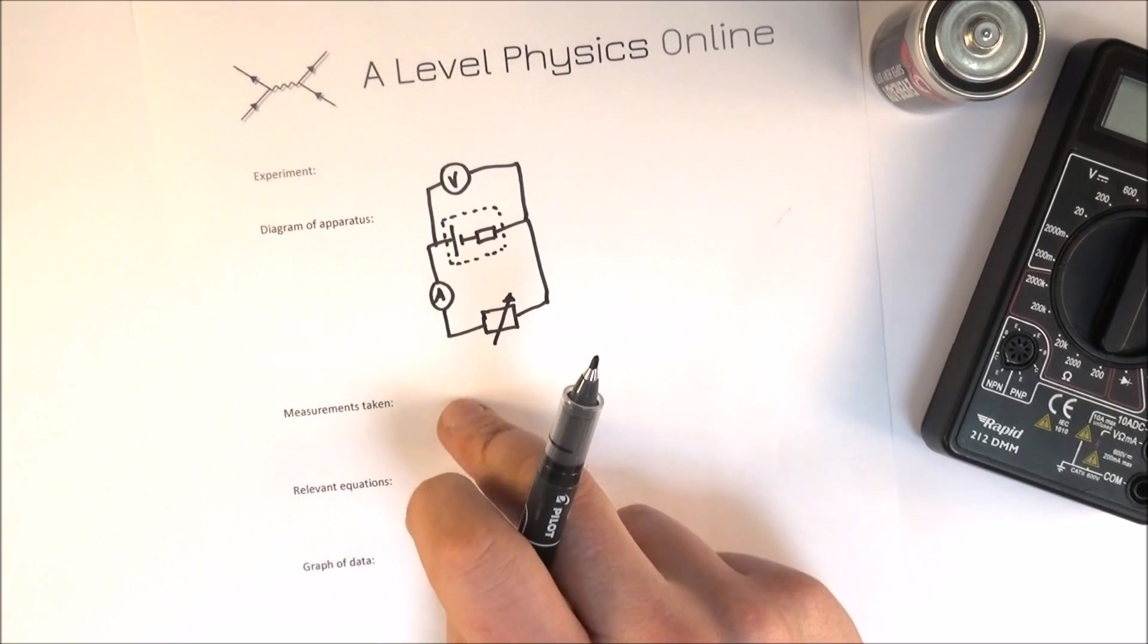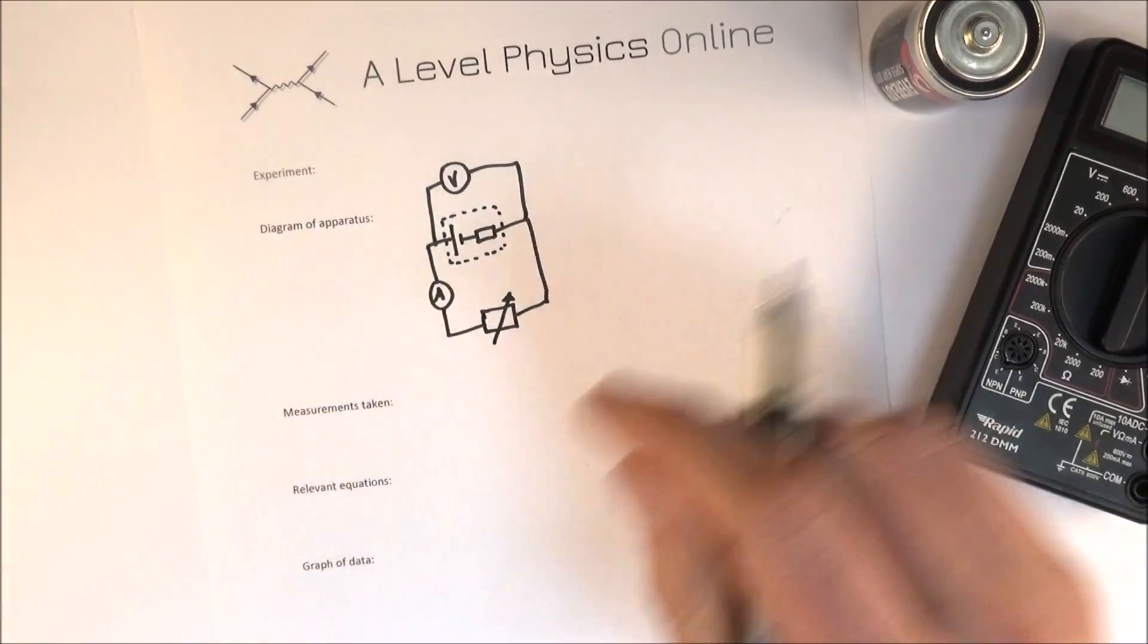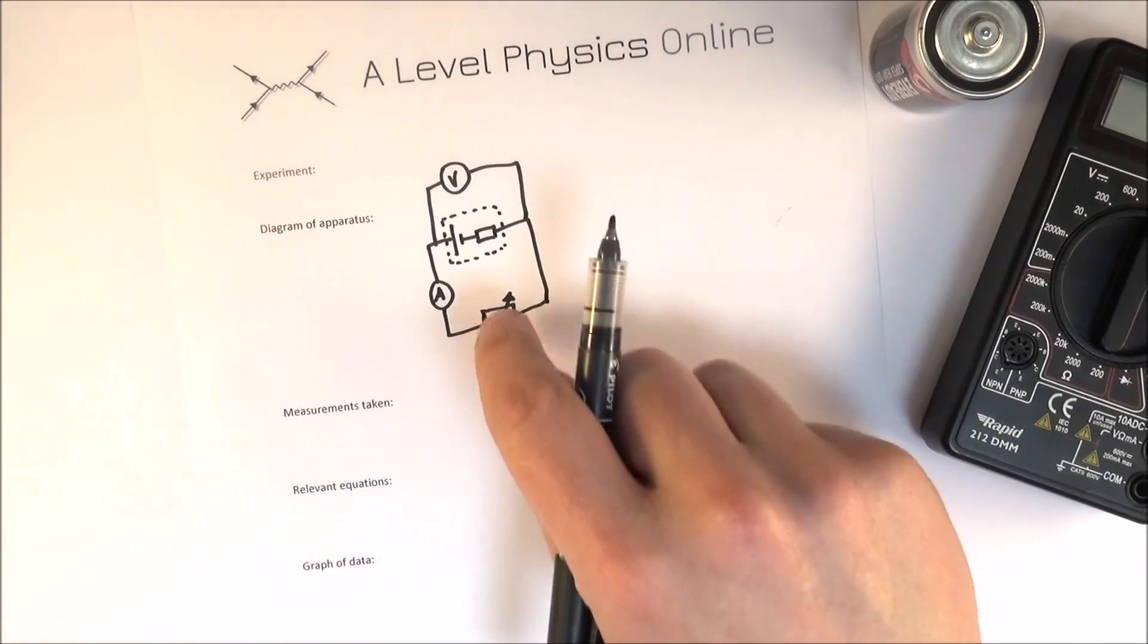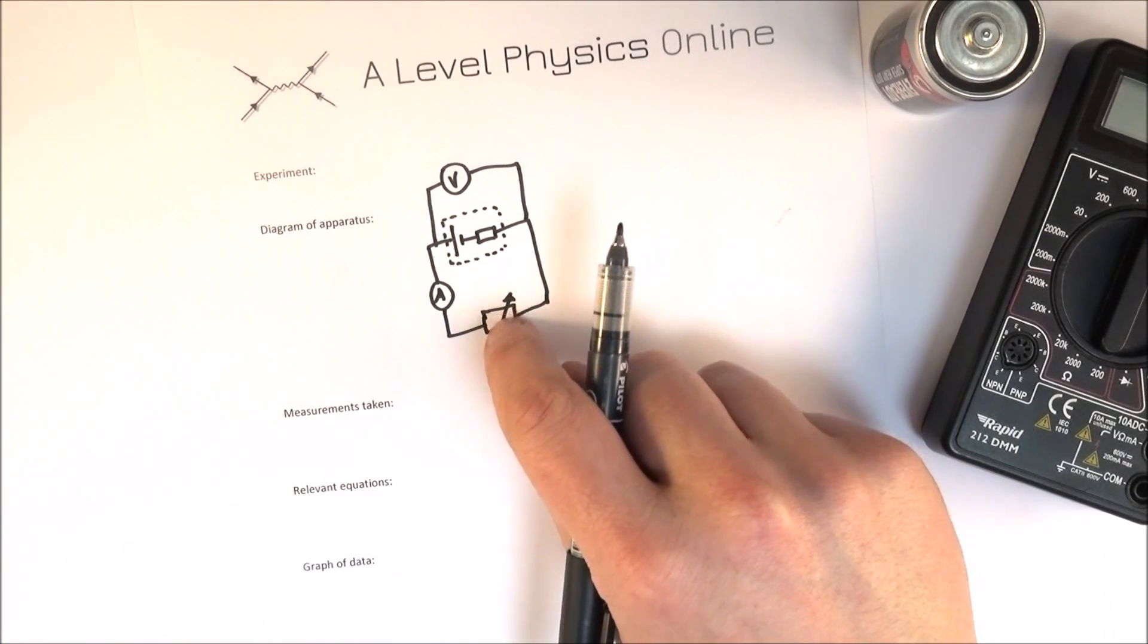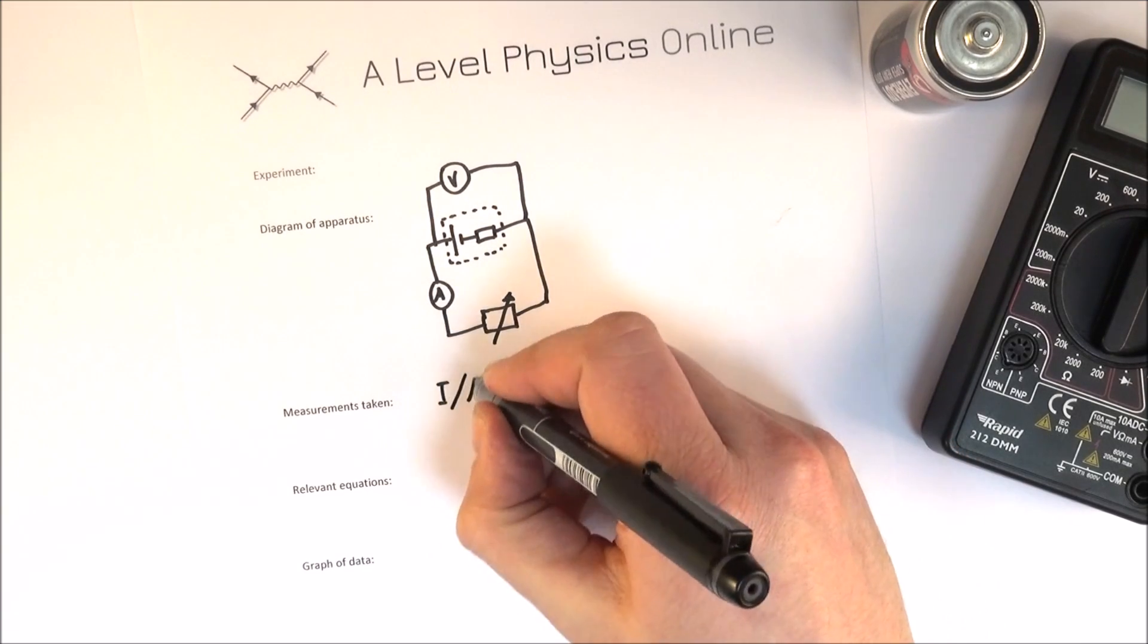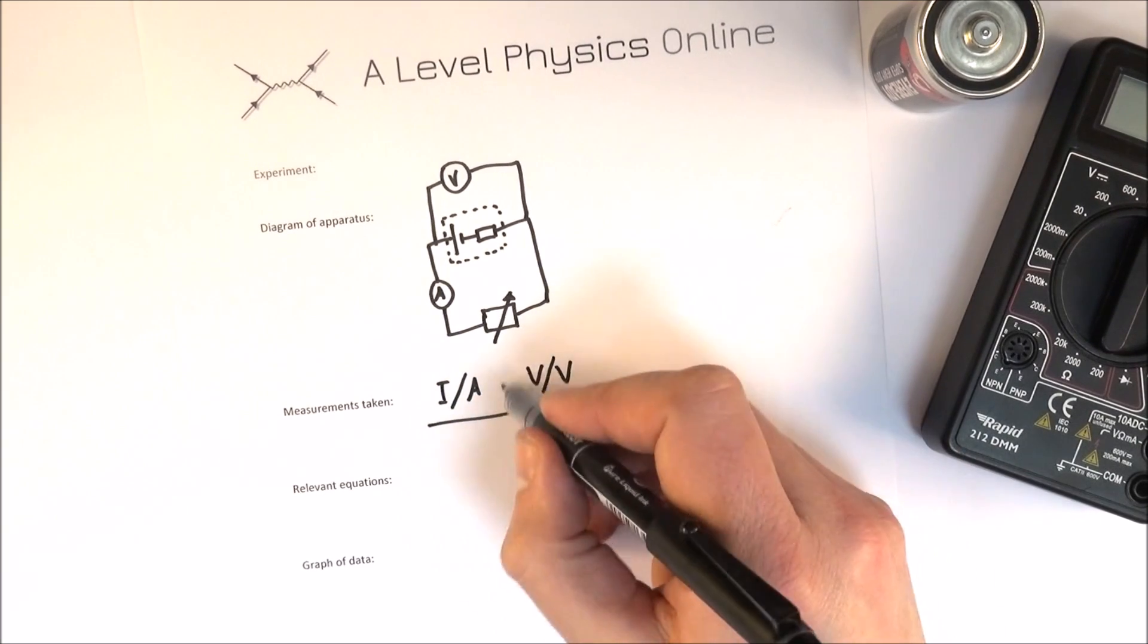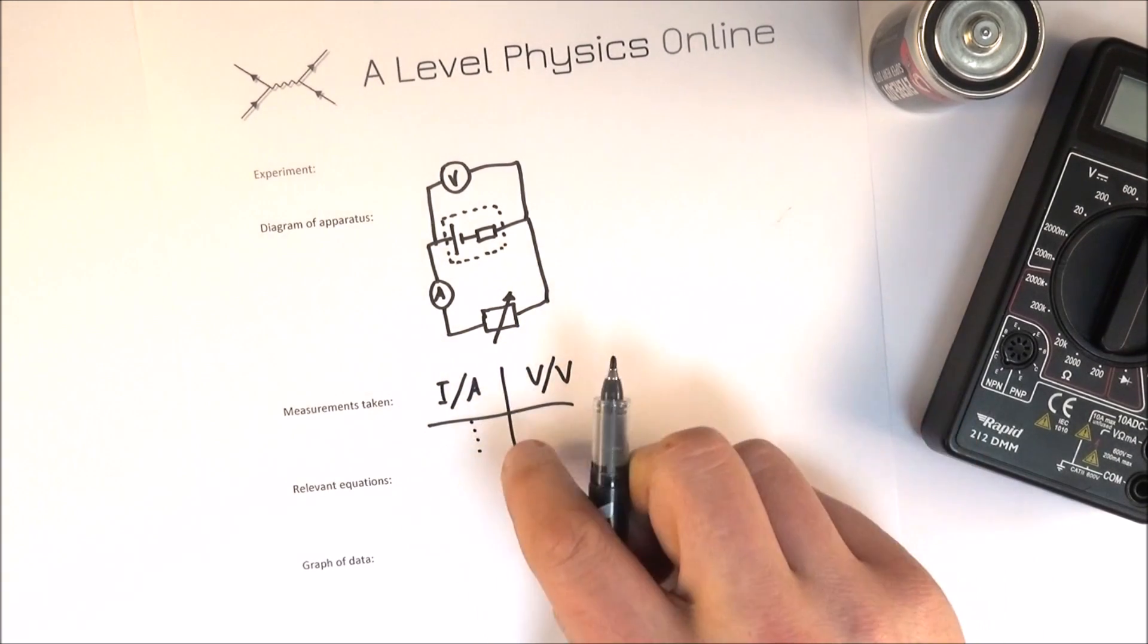But then what measurements am I taking? Well this is what you've got to think about. Sometimes they're straightforward, sometimes they're a bit more tricky. It might be in this case here. What you're doing is you change the resistance of that external part of the circuit and then you record maybe the current in amps and the potential difference V in volts. And you maybe take sort of six readings of each of these.